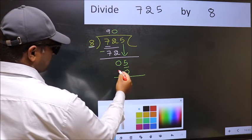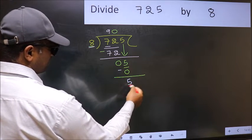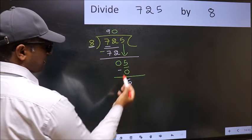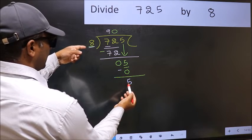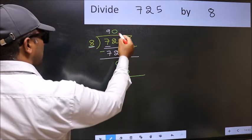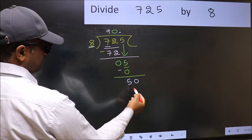Now we should subtract. 5 minus 0, 5. Over here, we did not bring any number down. And 5 is smaller than 8, so now we can put dot and take 0. So 50.